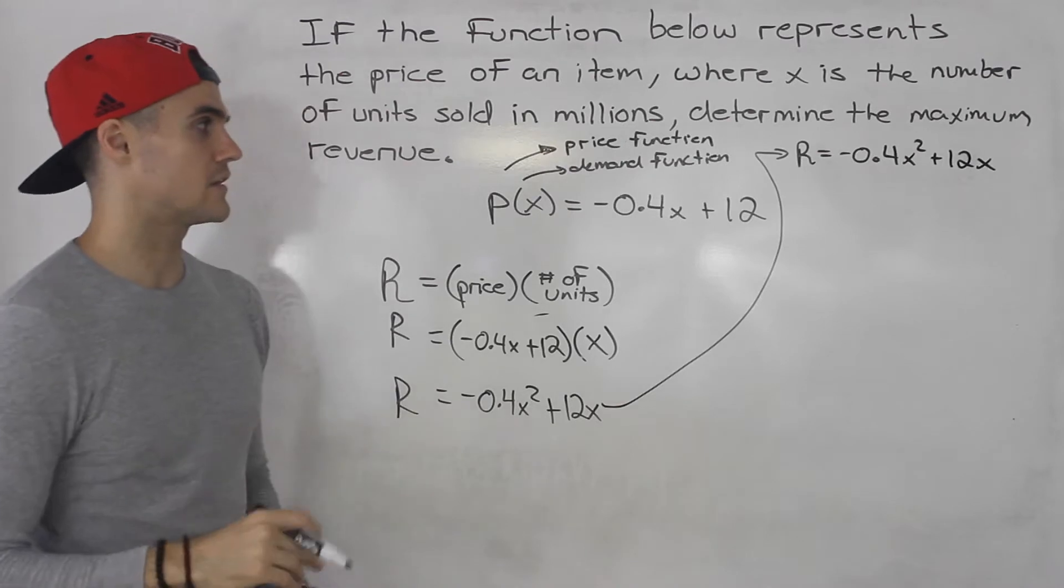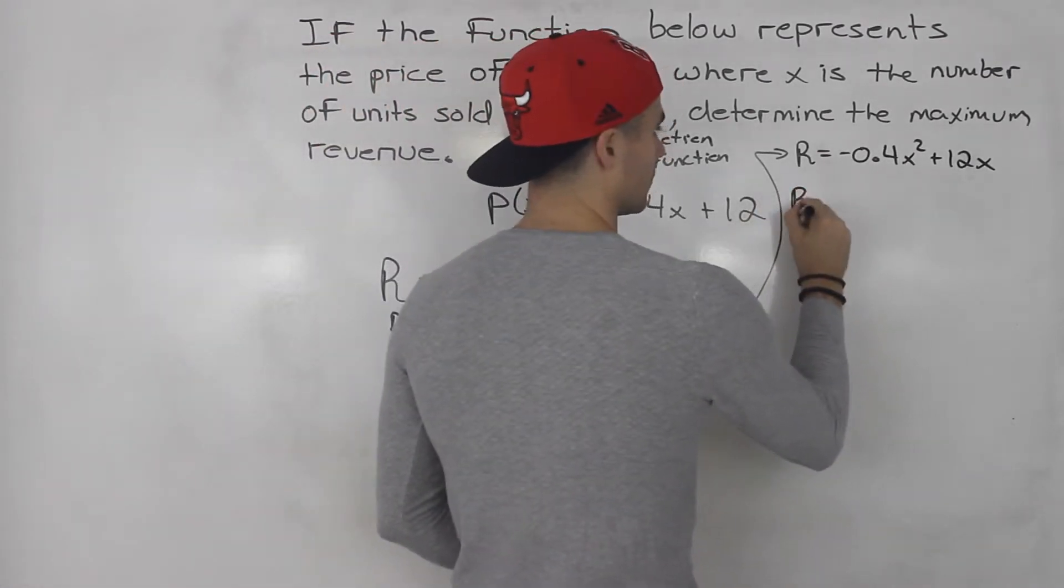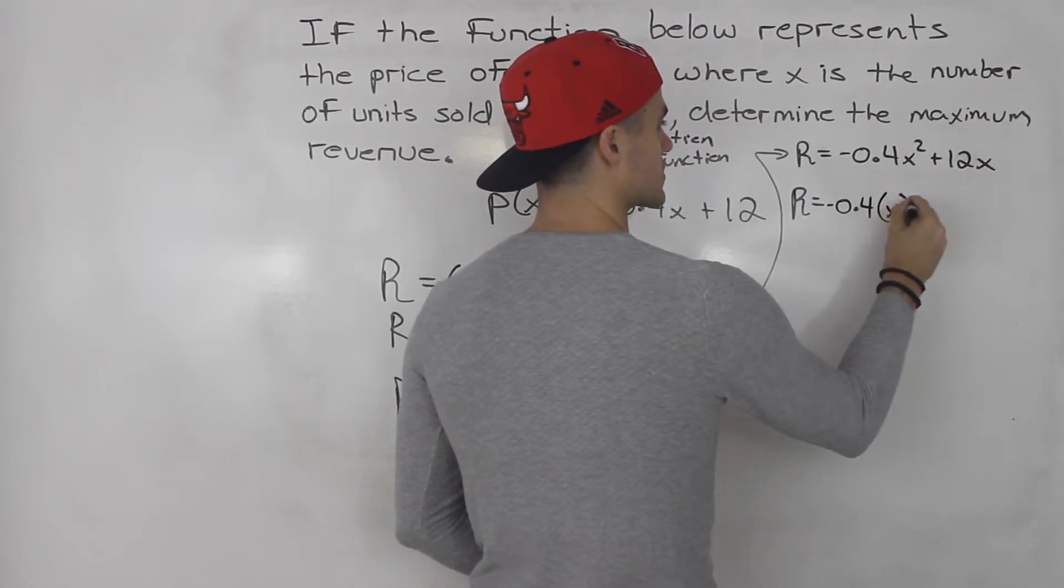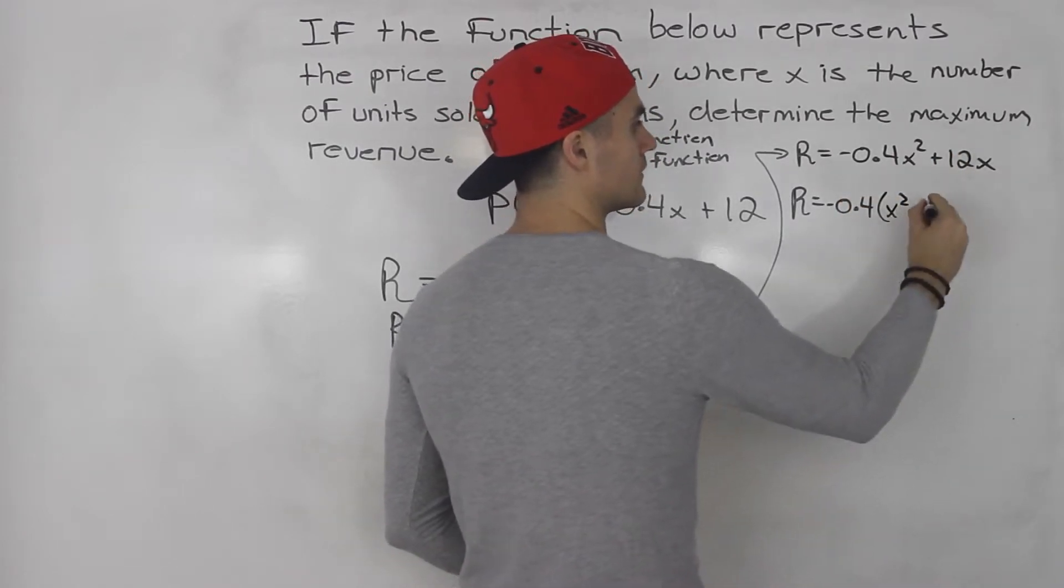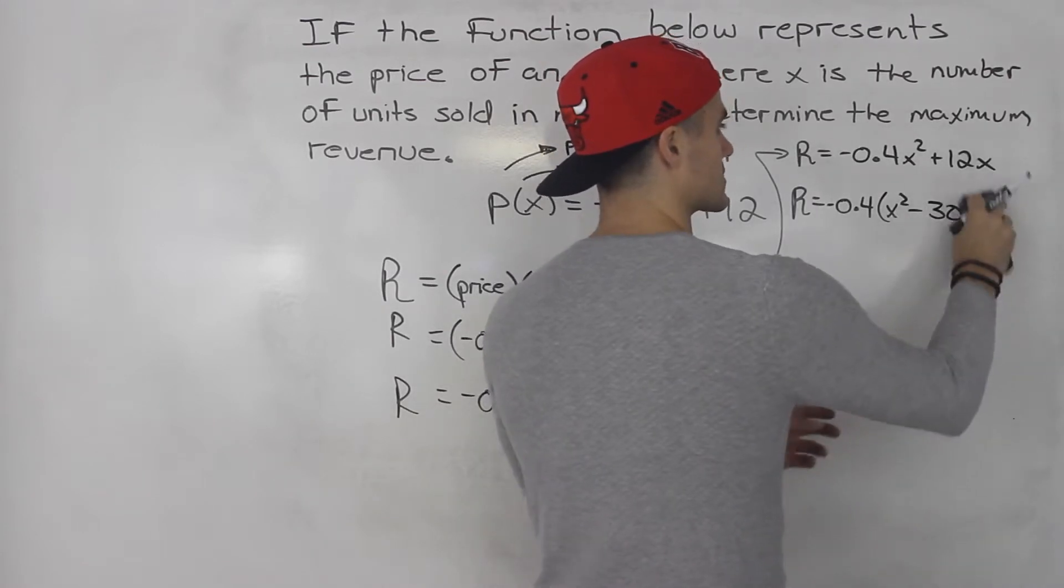And now with this revenue function we have to find the maximum revenue. So let's complete the square. So we can factor out a negative 0.4 from both of these, so we'd have x squared minus 12 divided by negative 0.4, which gives us negative 30x.